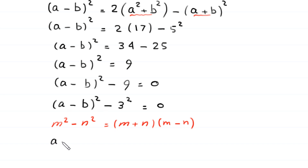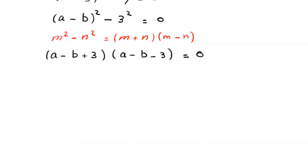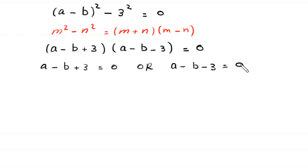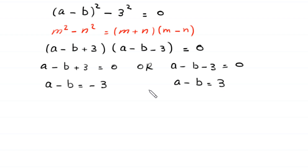Using the algebraic identity m squared minus n squared equals m plus n times m minus n, this factors as (a minus b plus 3)(a minus b minus 3) equals 0. So either a minus b plus 3 equals 0, giving a minus b equals negative 3 (equation 3), or a minus b minus 3 equals 0, giving a minus b equals positive 3 (equation 4).